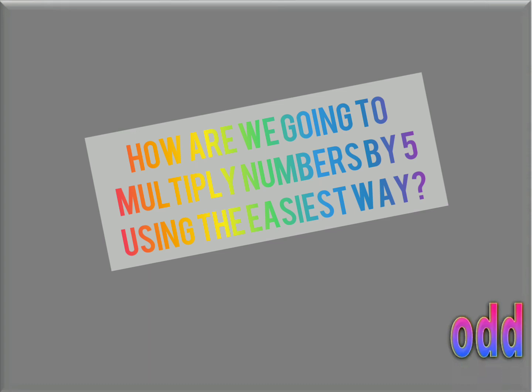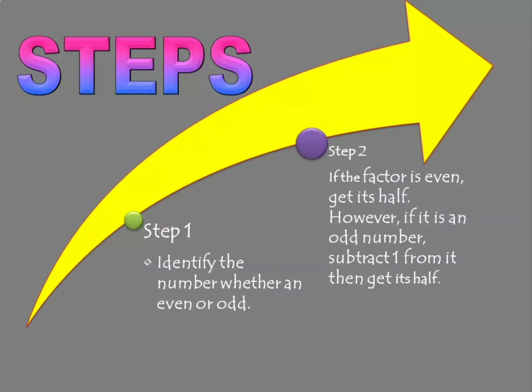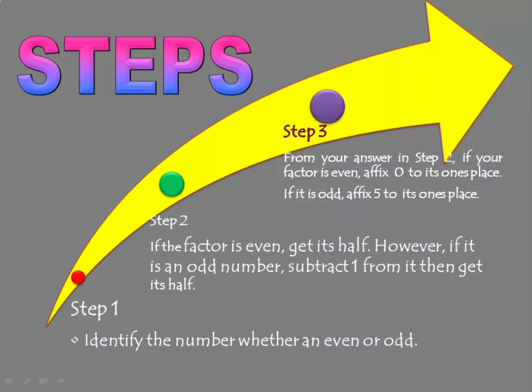How are we going to multiply numbers by 5 the easiest way? Simply by following these steps. Step 1: identify the number whether even or odd. Step 2: if the factor is even, get its half. However, if it is an odd number, subtract 1 from it then get its half. Step 3: from your answer in step 2, if your factor is even, affix 0 to its ones place; if it is odd, affix 5 to its ones place.